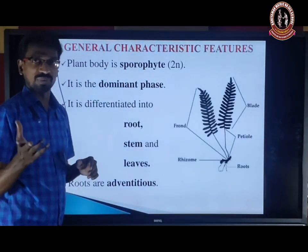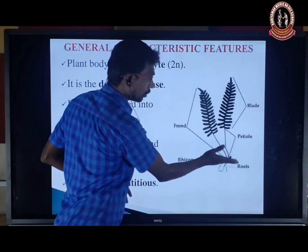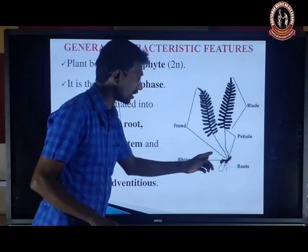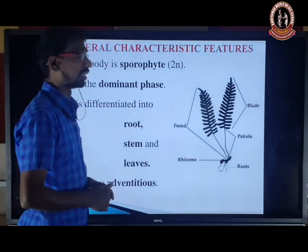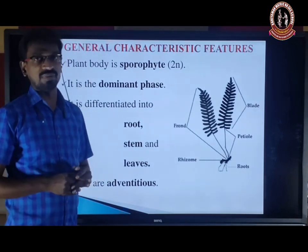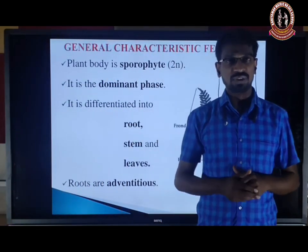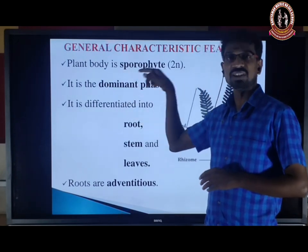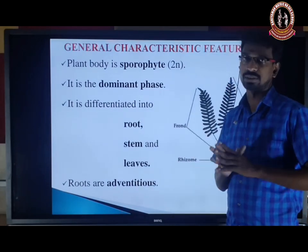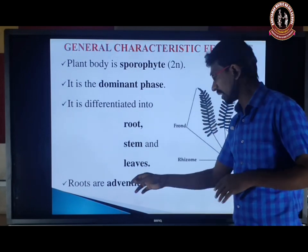The plant body is a sporophyte. The sporophyte plant body is differentiated into root, stem, and leaves — the leaf-like structure is generally called a frond. The plant body is a sporophyte, that is diploid, and it is the dominant phase. The root is adventitious — meaning the primary root is replaced by adventitious roots.